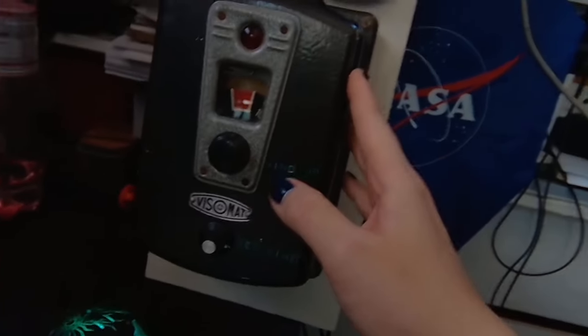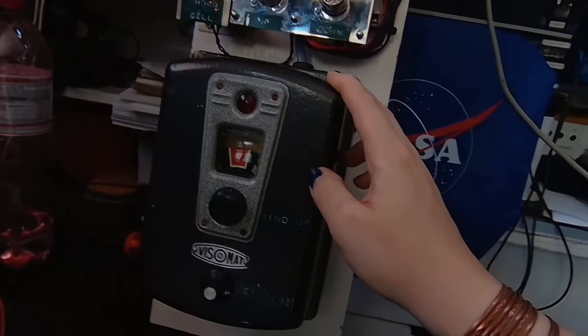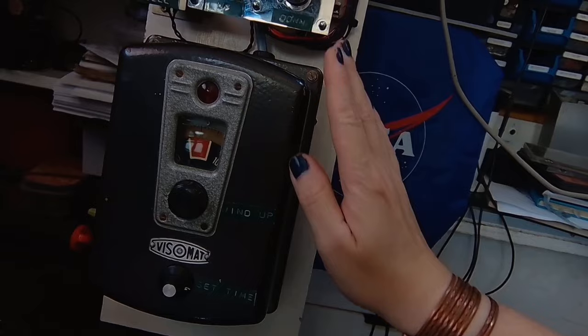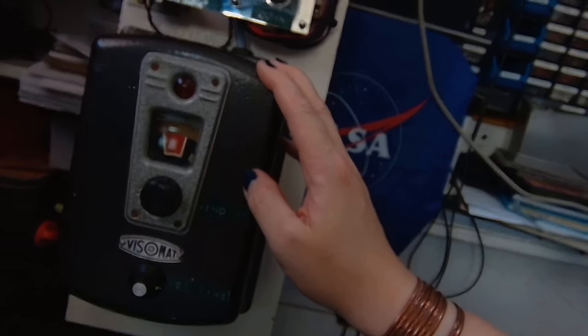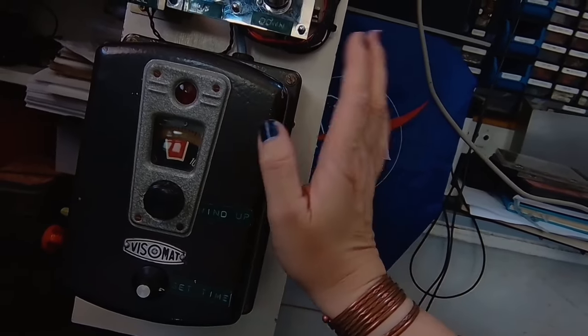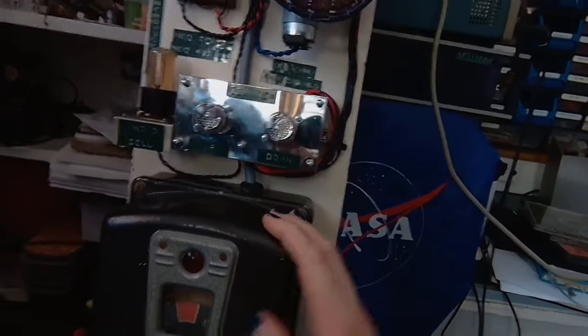And the visumat is also powered from the separation transformer for safety. I could connect it to the 230 from the mains, but I didn't want to. The enclosure is grounded, but yeah.